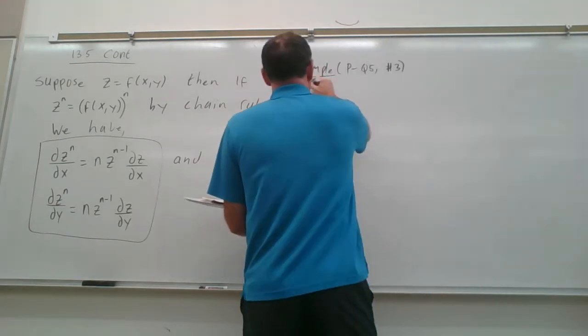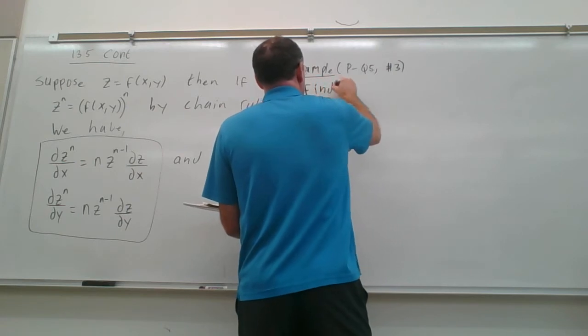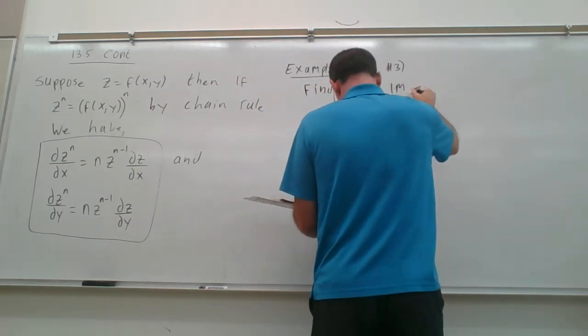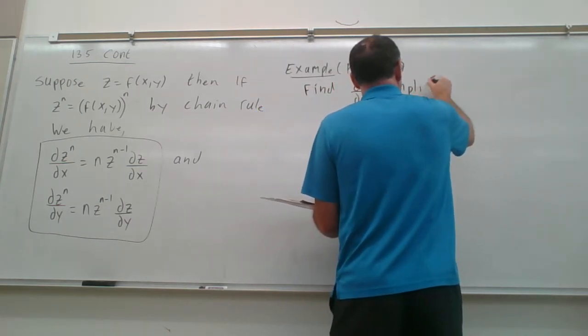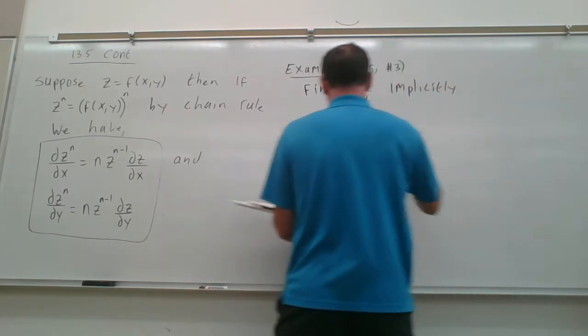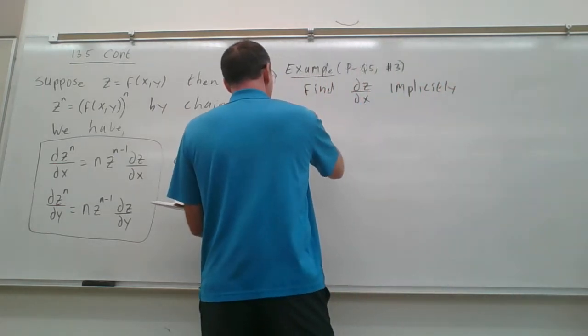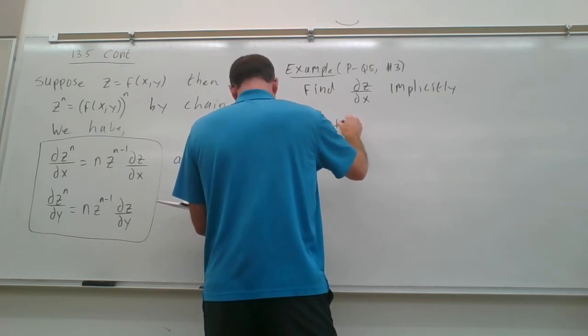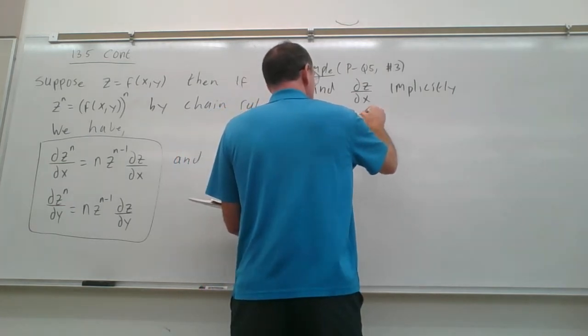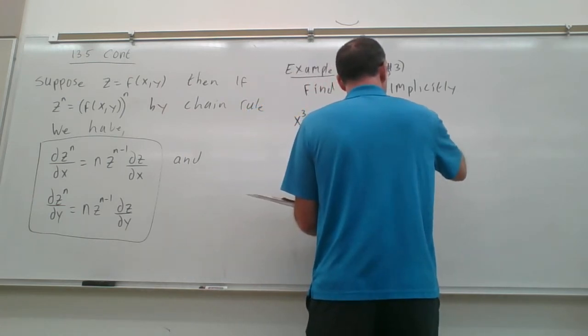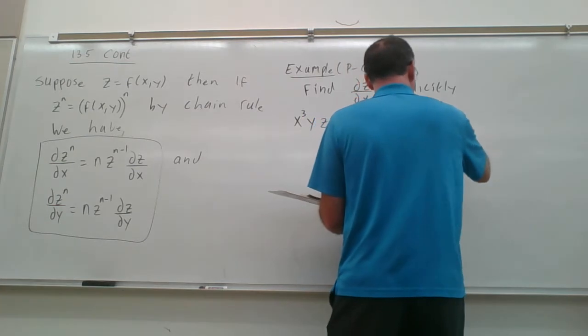So it says, find partial z with respect to x implicitly. And our function here is x³yz + z²y + 2x² = 7.